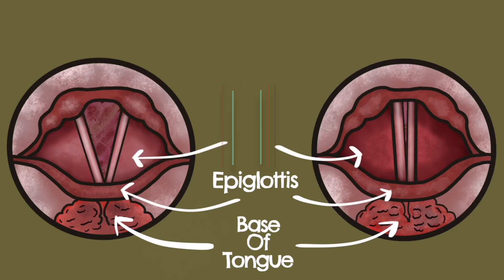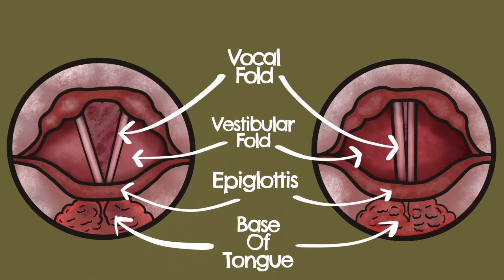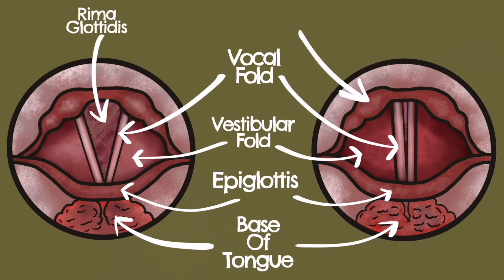We can also see here the vestibular folds, also known as the false vocal cords. They are folds of mucous membrane that enclose the vestibular ligaments. Here are the vocal folds themselves — the true vocal cords. They are twin infoldings of mucous membrane that vibrate and modulate the flow of air expelled on phonation. Let's now have a look at the rima glottidis. This is the opening between the true vocal cords and the arytenoid cartilages. The arytenoid cartilages are a pair of small three-sided pyramids to which the vocal cords attach to enable vocal cord movement.